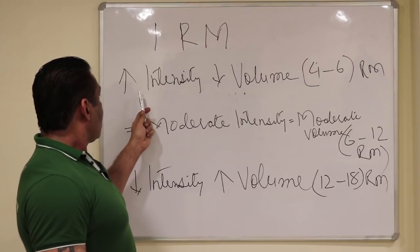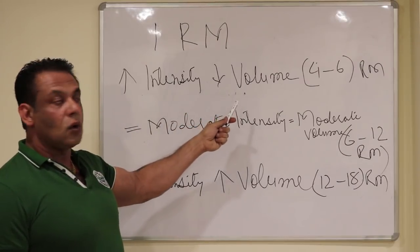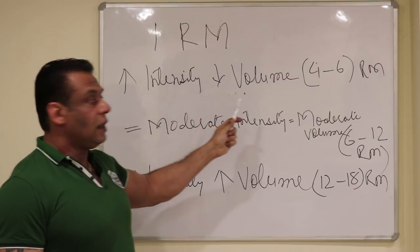One way of working out is high intensity, low volume, which means strengthening, which means 4 to 6 repetition.